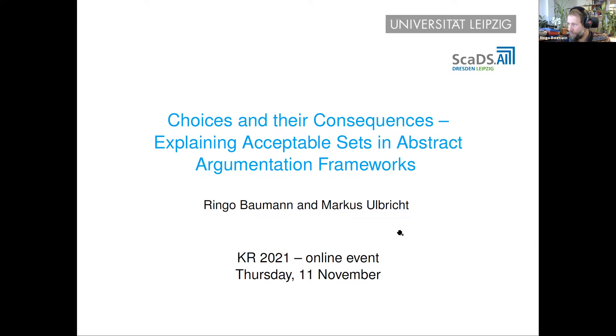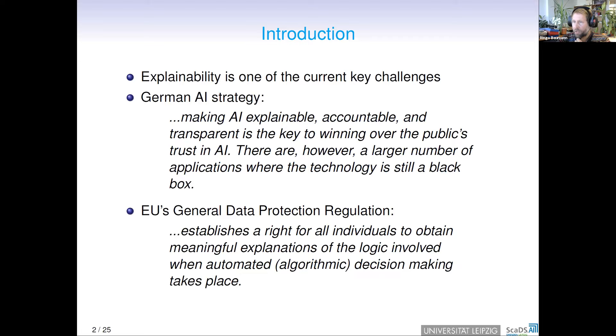This is a joint paper with Markus Ulbrich. My name is Ringo Baumann, and the title of the talk is Choices and their Consequences: Explaining Acceptable Sets in Abstract Argumentation Frameworks. As you already know, explainability is currently one of the key challenges in AI. For instance, in the German AI strategy, you can read making AI explainable, accountable, and transparent is the key to winning over the public's trust. There are, however, a larger number of applications where the technology is still a black box.